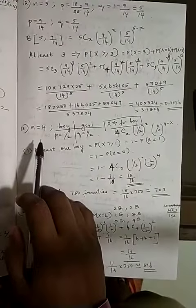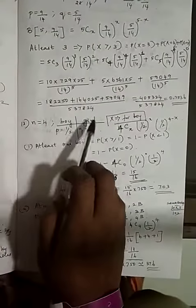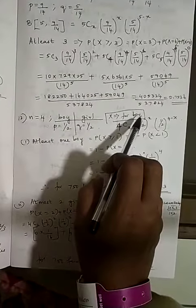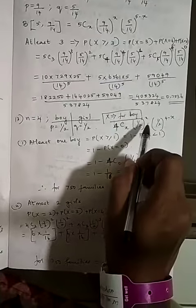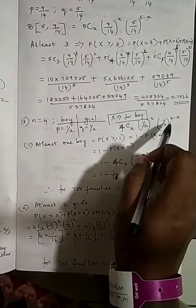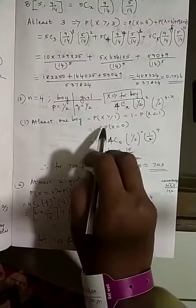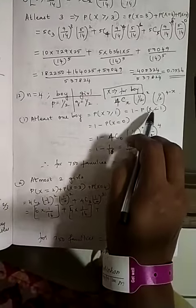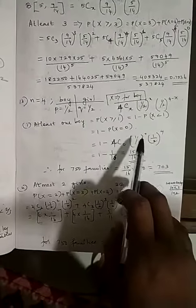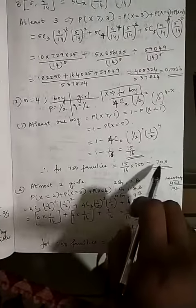Question 13: Out of 750 families with 4 children, n = 4. The probability for boy or girl is 1/2 each. Let X represent boys. For at least 1 boy: P(X ≥ 1) = 1 − P(X=0) = 1 − 4C0·(1/2)^4 = 15/16. Multiplying by 750 families gives approximately 703 families.